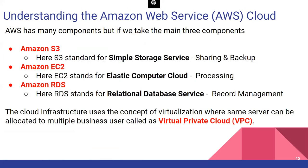AWS has many components, but three core ones. First is Amazon S3 — Simple Storage Service — used for sharing and backup. Whatever role a pen drive plays, S3 does the same thing but in the cloud. It's a combination of your hard disk and pen drive — you can do online storage and backup.